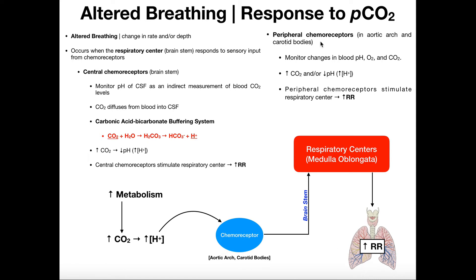There are also peripheral chemoreceptors found in the aortic arch and in the carotid bodies. These basically function the same way as the central chemoreceptors, except instead of monitoring cerebrospinal fluid, they measure blood pH directly. Their stimulus is also hydrogen ions, just as in the central chemoreceptors. When you have acidic blood — low pH — they sense a high degree of hydrogen ions, which tells them carbon dioxide levels are elevated. Peripheral chemoreceptors stimulate the respiratory center to increase the respiratory rate. This is called the chemoreceptor reflex.